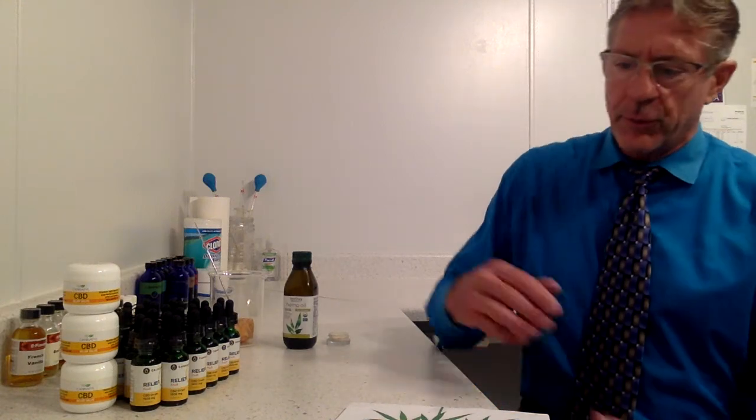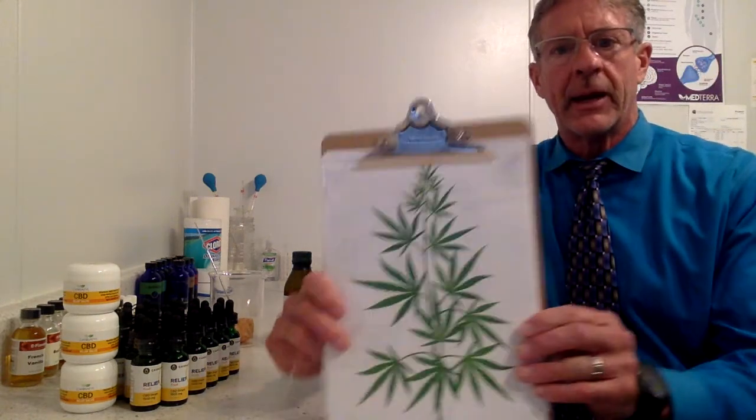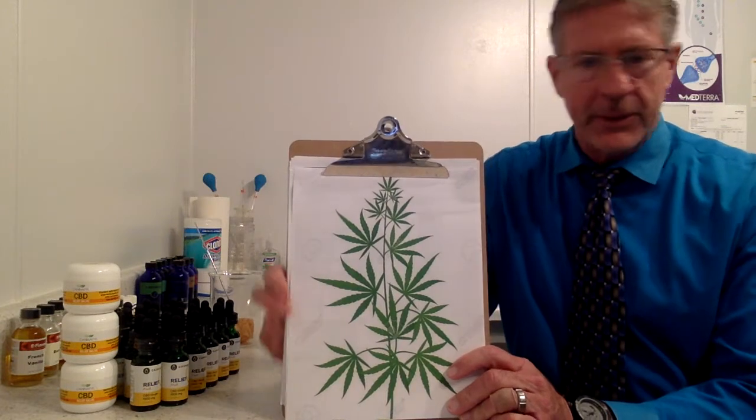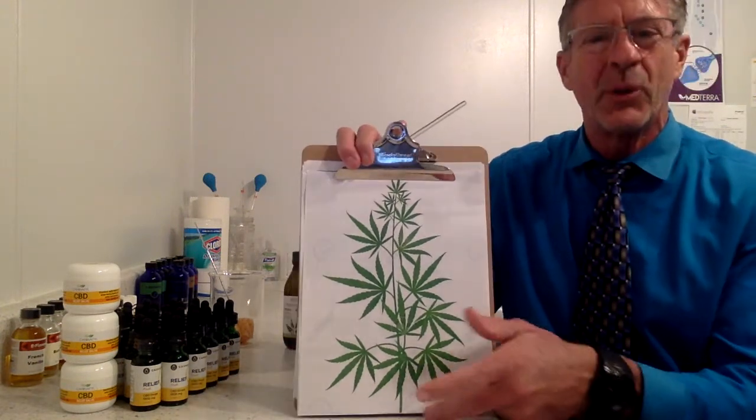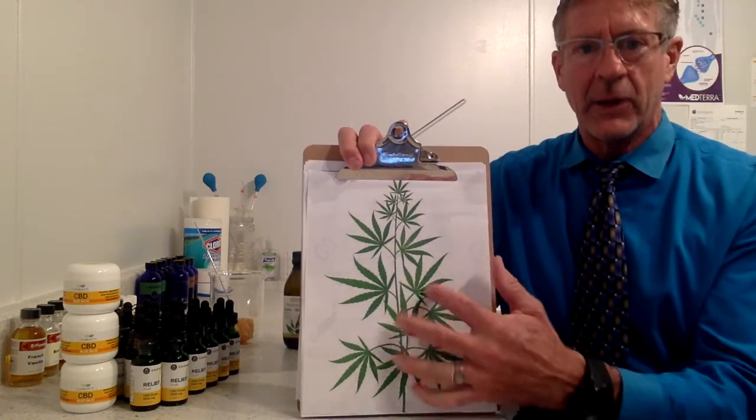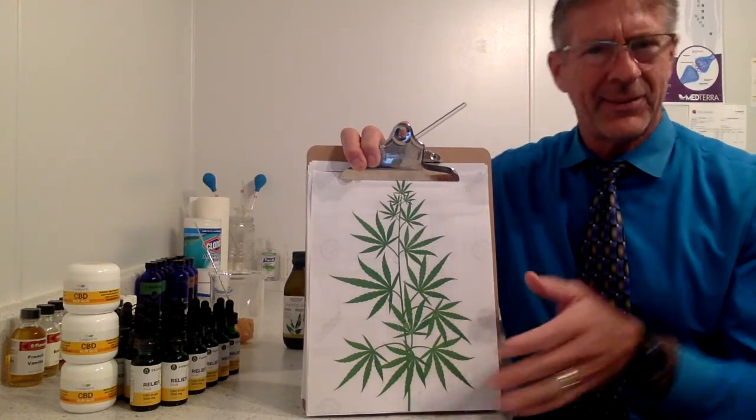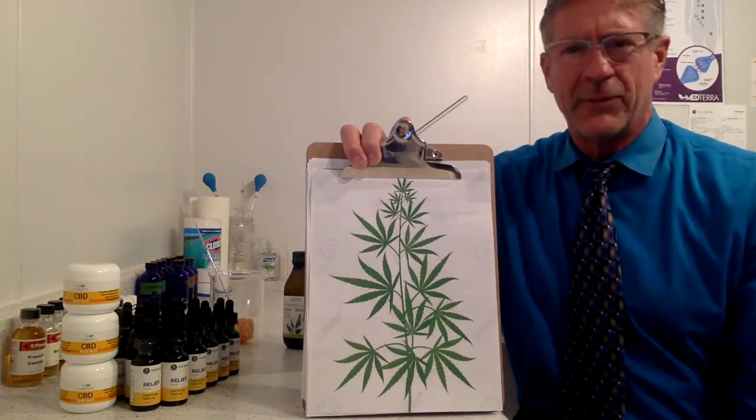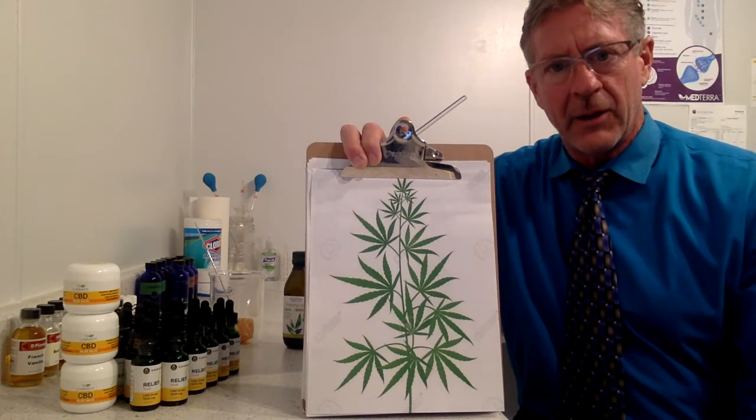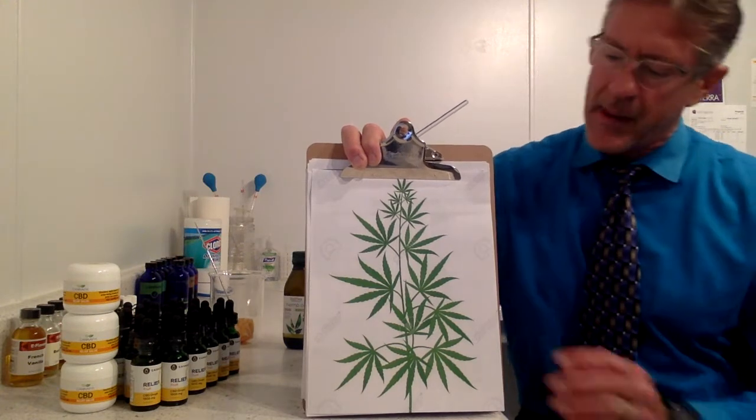So where do we get it from? First of all, I want you to recognize that this is a hemp plant. A little bit different from a marijuana plant because this thing is mostly stalk and then we have a few leaves. And this plant grows to 10, 12, 15 feet tall, so it's a long scraggly plant.